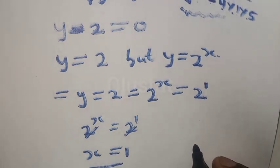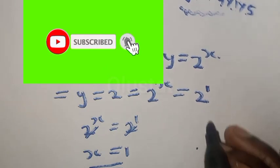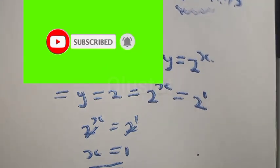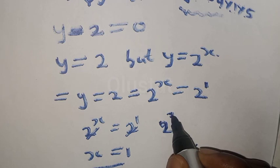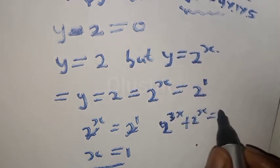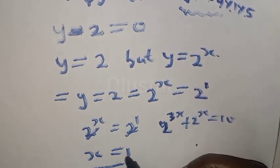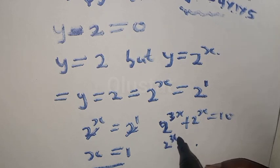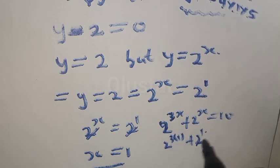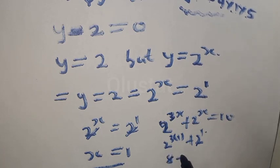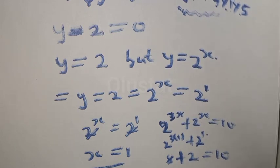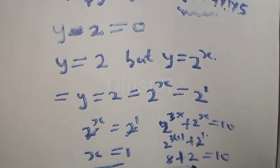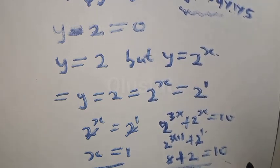Let's check to confirm our answer. We substitute x equals 1: 2 raised to power 3 times 1 plus 2 raised to power 1, that is 2 raised to power 3 is equal to 8, plus 2 raised to power 1 is 2. Then 8 plus 2 equals 10. The left-hand side equals the right-hand side, so our answer is correct. Therefore, the real value of x is equal to 1.